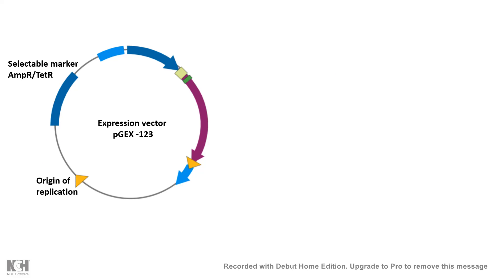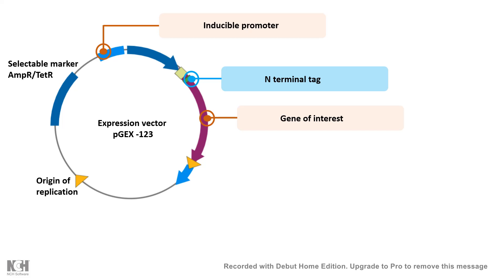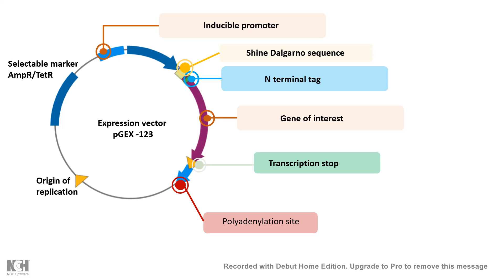Everything related to transcription and translation machinery should be present in this vector backbone, otherwise the purpose of the vector won't be fulfilled. The additional features compared to a plasmid include: an inducible promoter by which you can spatiotemporally control the expression of the gene of interest, the gene of interest itself, and an N-terminal or C-terminal tag, which is very handy for affinity purification.